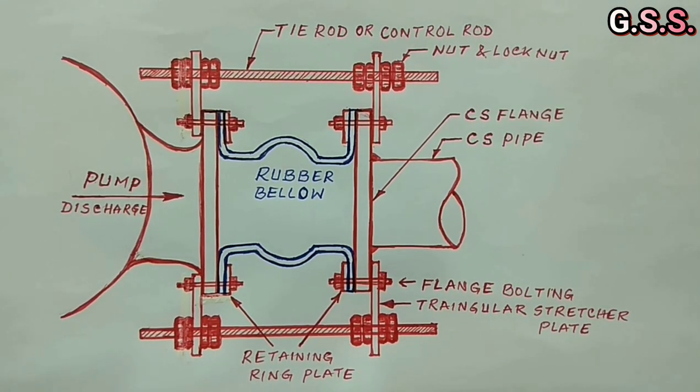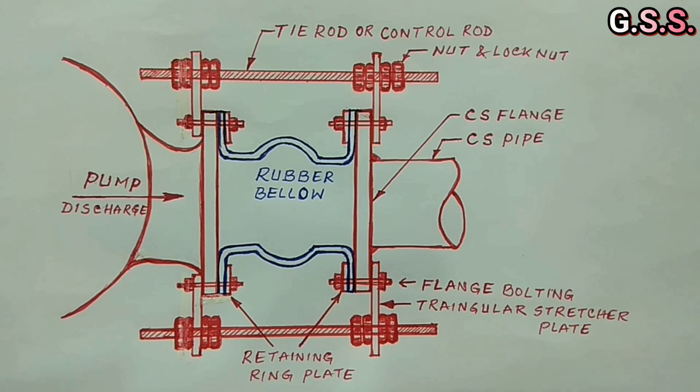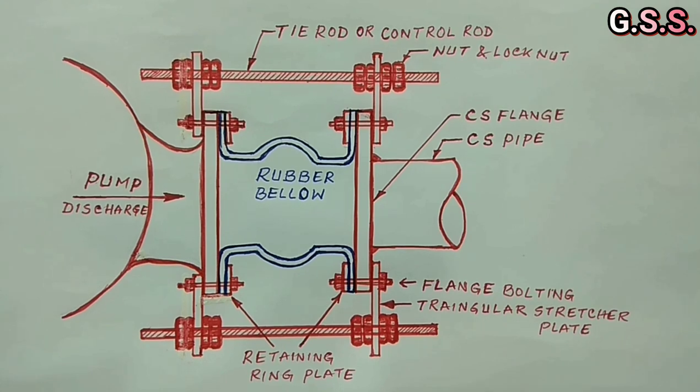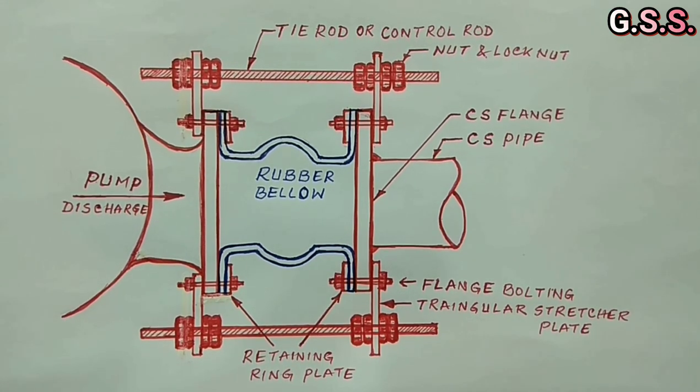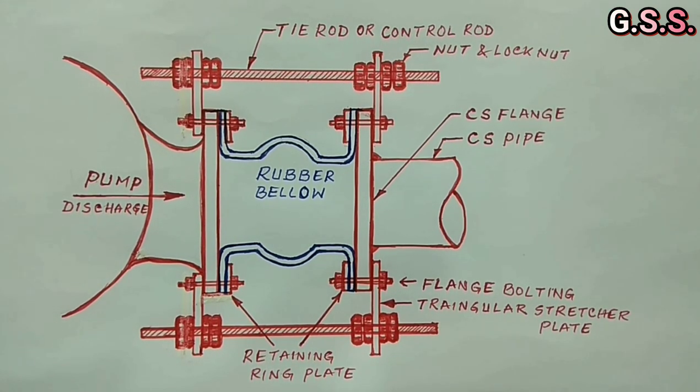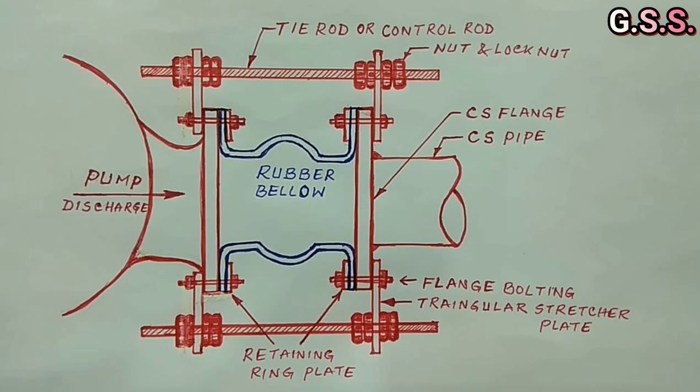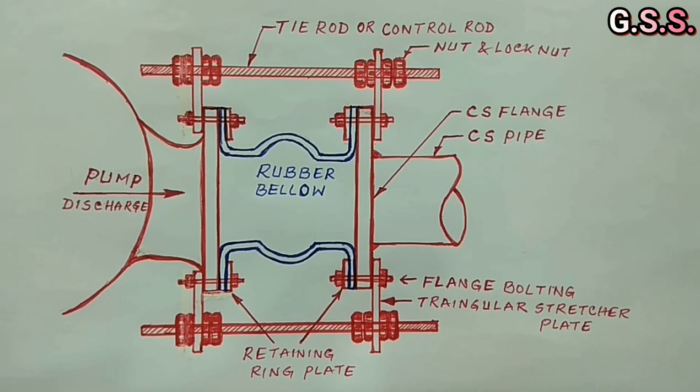This type of rubber bellows are used for non-critical services like cooling water, air, etc. up to 10 bar gauge pressure and 60 degree Celsius temperature. For high temperature and high pressure critical services metallic tied lateral bellows are used.